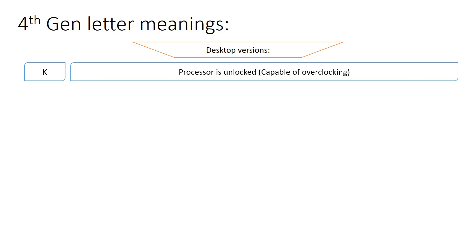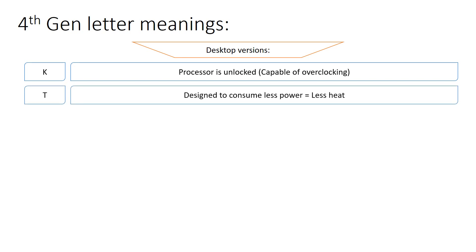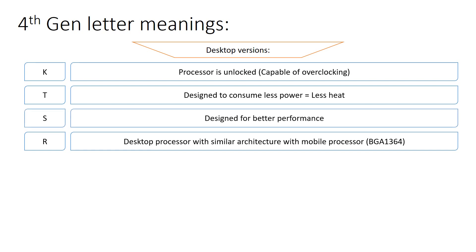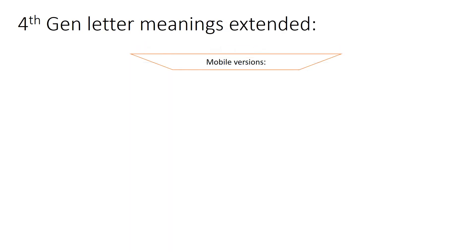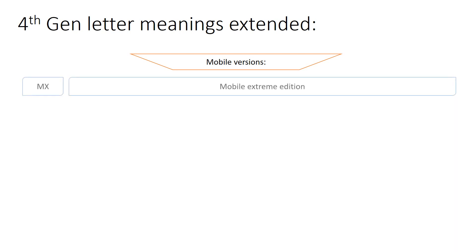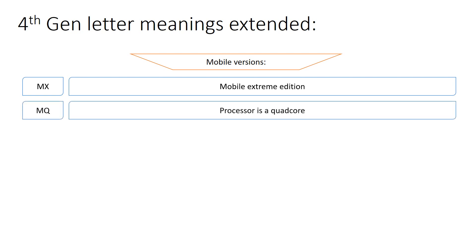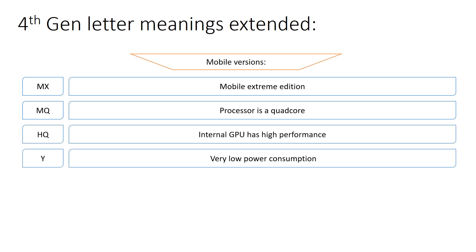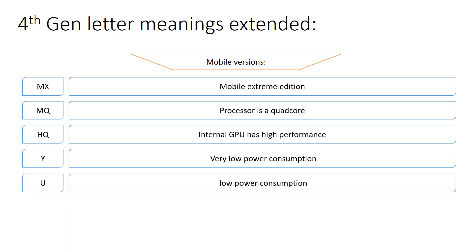For the 4th generation desktop versions, K means the processor is unlocked and capable of overclocking or underclocking. T is designed to consume less power and less heat for smaller cases. R is the desktop processor with similar architecture to a mobile processor with the BGA 1364 socket. S is designed for better performance. For mobile: MX is the mobile extreme edition processor, MQ means the processor is a quad core, HQ means high performance iGPU, Y is very low power consumption, and U is low power consumption.